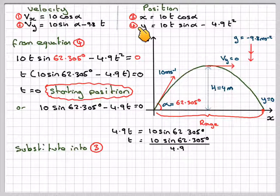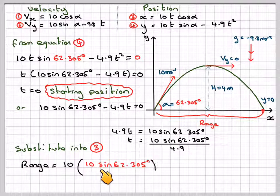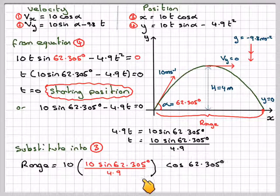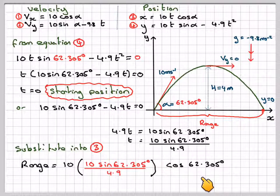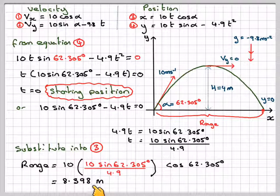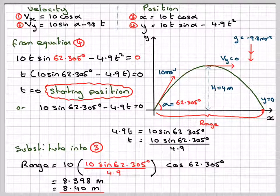Substituting that into equation 3, the range will be 10 times T which is 10 sin 62.305 divided by 4.9 times cos 62.305, which gives 8.398 metres or 8.40 metres.